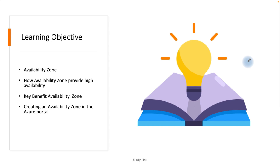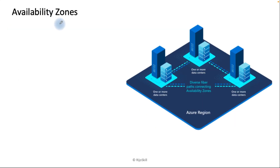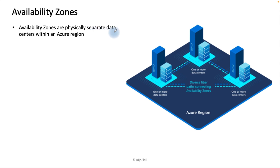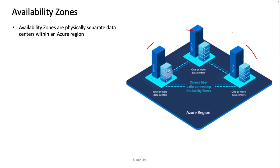First, what is an Availability Zone? Availability Zones are physically separate data centers within an Azure region. Looking at this diagram, you can see an Azure region with three physically separate zones — Zone 1, Zone 2, and Zone 3 — each representing a separate data center.